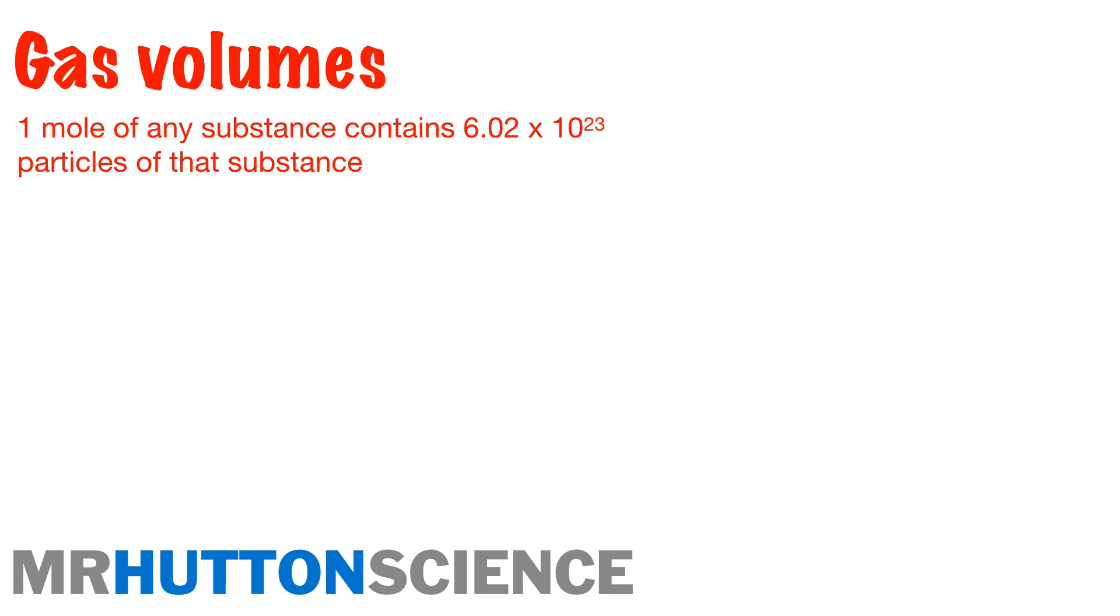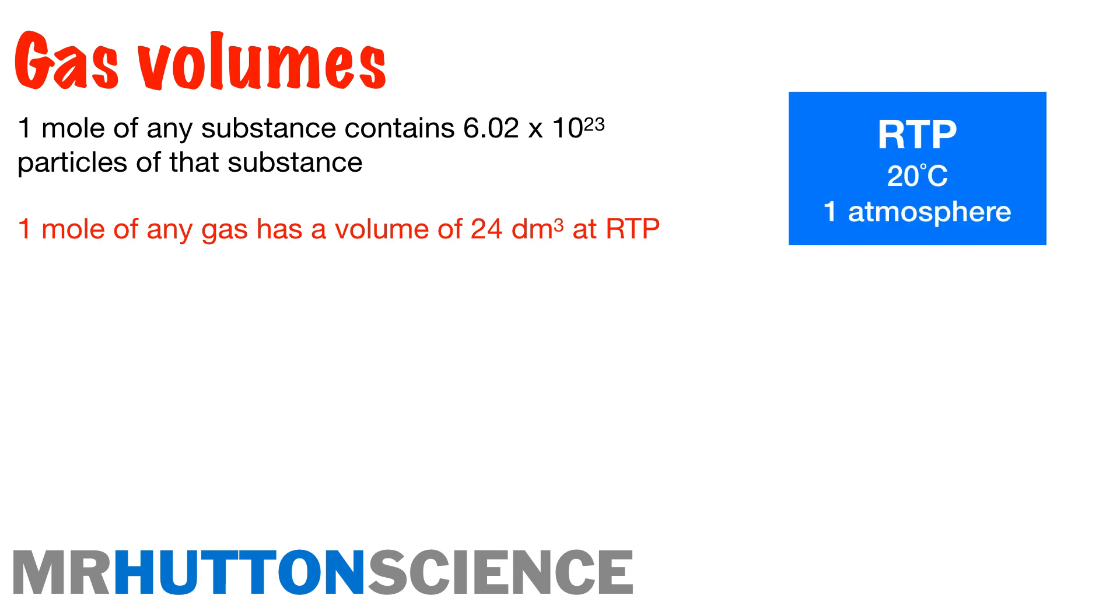So gas volumes. We know already that one mole of any substance contains 6.02 times 10 to the 23 particles of that substance. What's that number known as? Avogadro's constant, I hear you say. That is exactly right. So other piece of information you need to know is that one mole of any gas has a volume of 24 decimetres cubed at RTP. So RTP is room temperature and pressure and tends to be at GCSE 20 degrees Celsius and 1 atmosphere. So it's really important to know that is any gas.